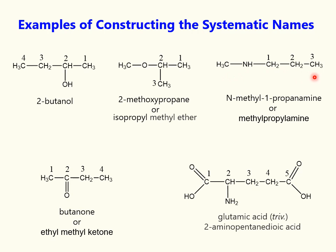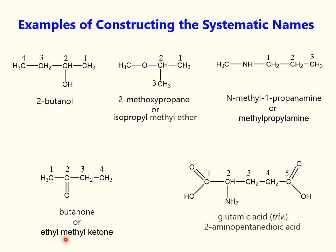The name of a secondary amine is N-methyl-1-propanamine. The locant N means that substitution with a methyl group was performed at the nitrogen atom, not at carbon. Using radical functional nomenclature, we get the simpler name methylpropylamine. This compound is named simply butanol. The radical functional name of the ketone compound is ethyl methyl ketone.